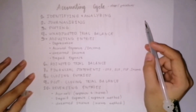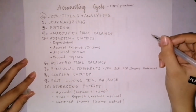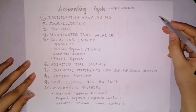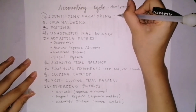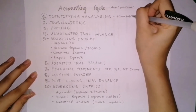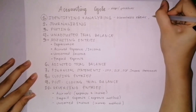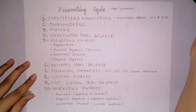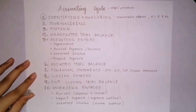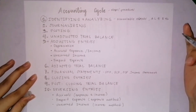Let's start with Step 1: identifying and analyzing. Here, we analyze documents whether they are accountable events, meaning they have an effect on assets, liabilities, income, and expense accounts. Examples of document sources are vouchers, receipts, invoices, and other documents that represent or serve as evidence of a transaction.